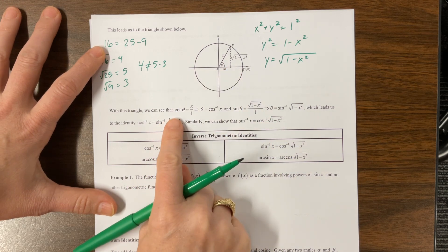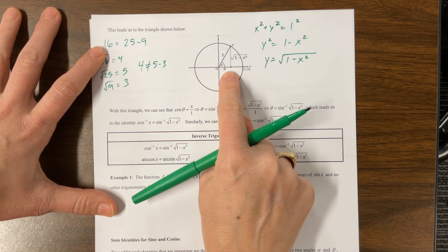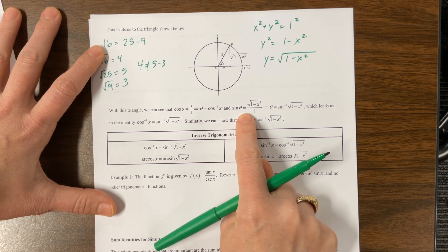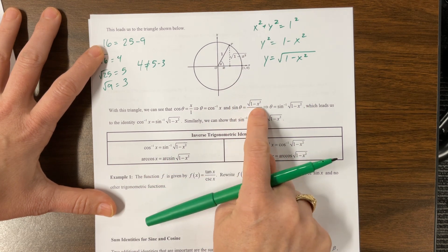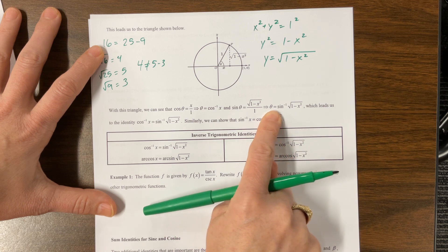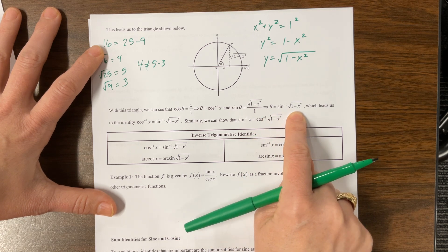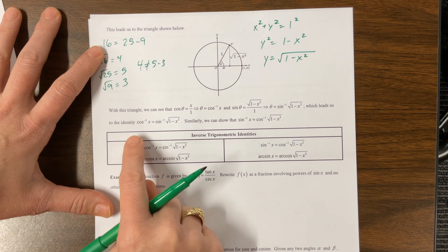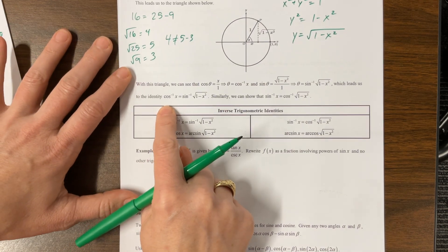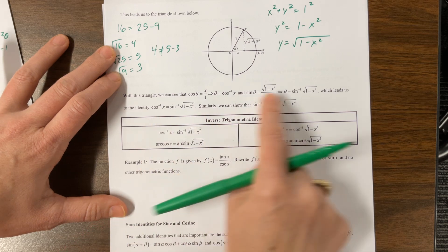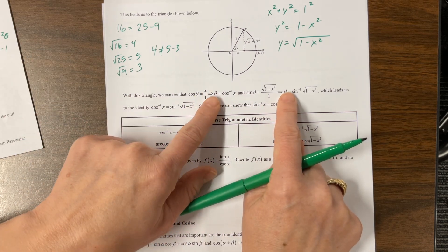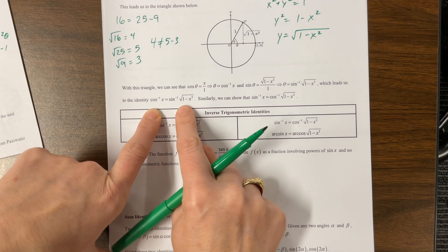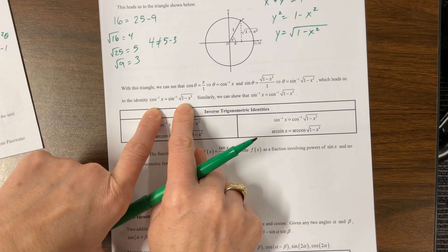So then they're saying, well, we know that cosine of theta is equal to x, so theta would be equal to the inverse of cosine, and sine would be equal to the square root of 1 minus x squared, so theta would be the inverse sine of 1 minus, the square root of 1 minus x squared, which leads us to the identity that these were the same thetas, notice how we did this, that cosine, the inverse cosine is equal to the inverse sine of 1 minus x squared.